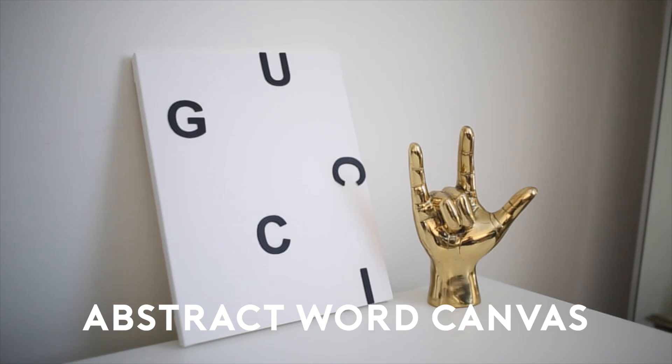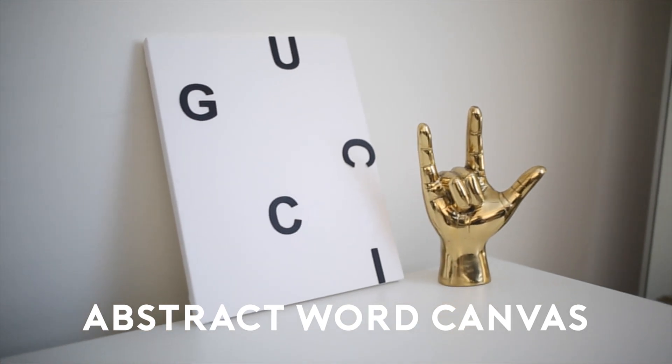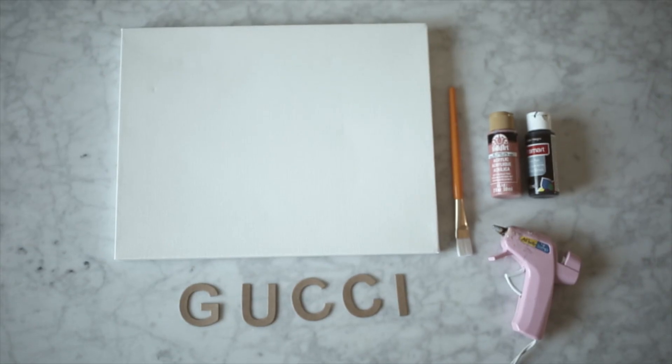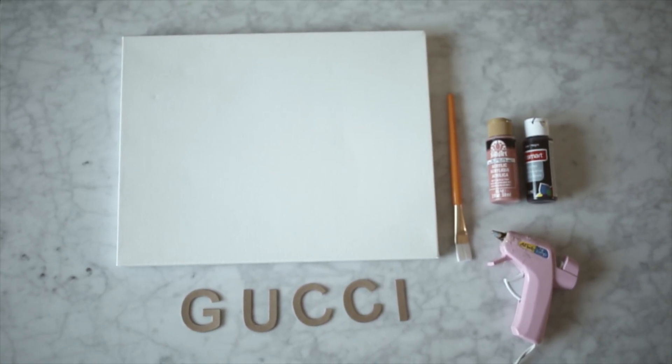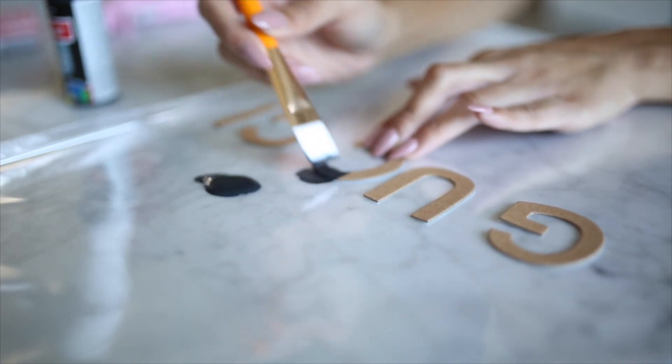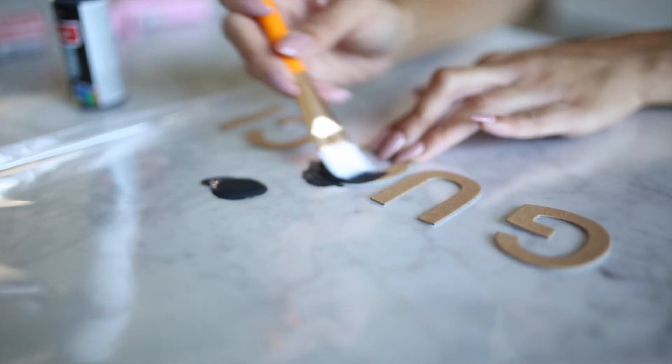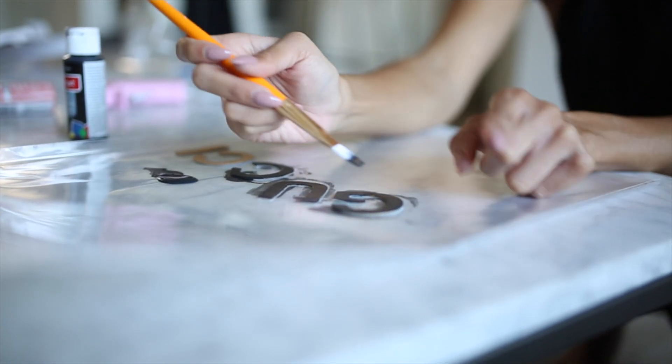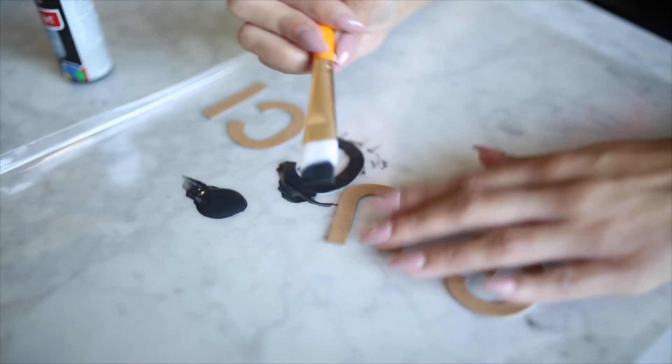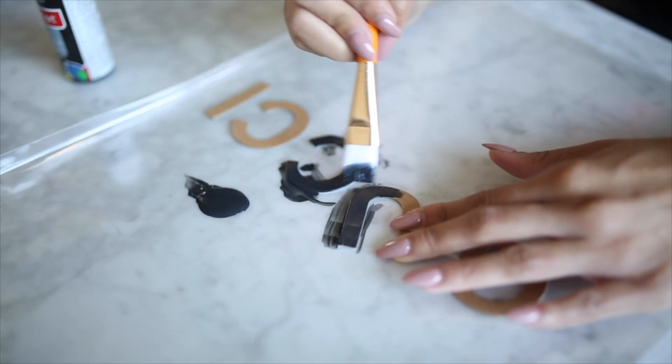This is definitely my favorite. This abstract word canvas turned out so well. So for this, you're just going to need some cardboard letters, a canvas, I use black acrylic paint and lastly, a hot glue gun. It's super simple. So I'm spelling out the word Gucci and you're just going to paint two layers of this black acrylic paint onto the cardboard letters. I will link everything down below, by the way. And yeah, after those are nicely painted and done drying, they take about like 15 minutes to dry.